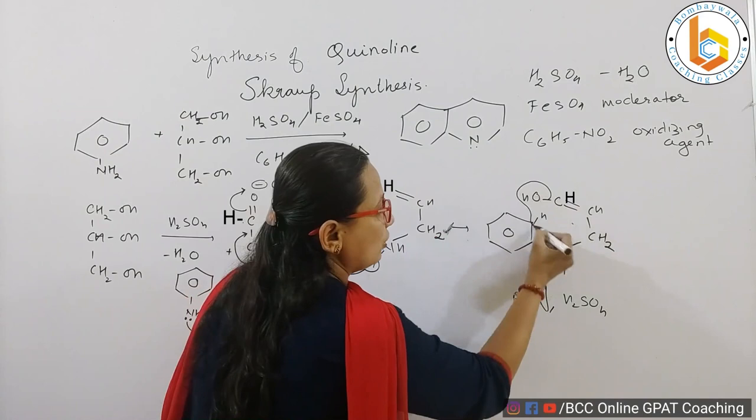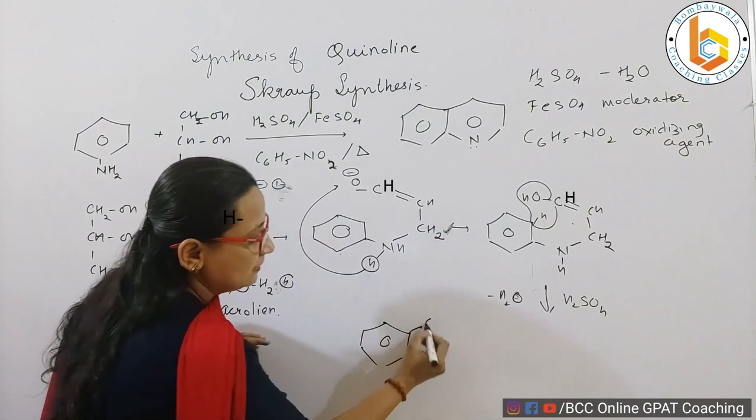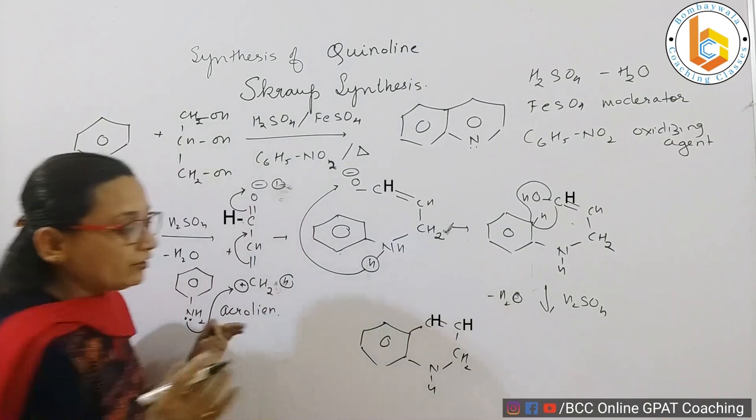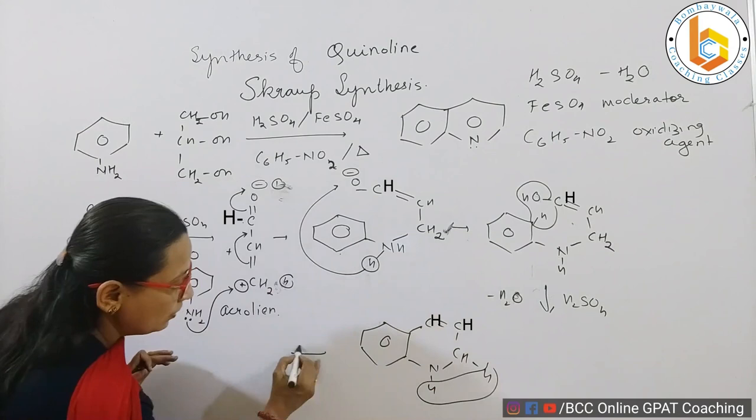Now again if I use catalyst as sulfuric acid, we know that there is a hydrogen here, so there will be loss of water molecule. So in that case I will get benzene-C double bond C-CH2-CH2-NH2.